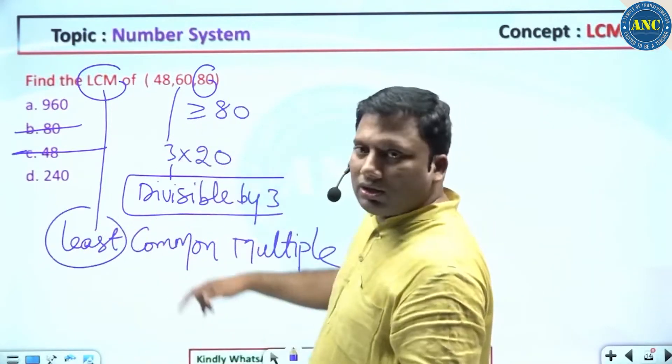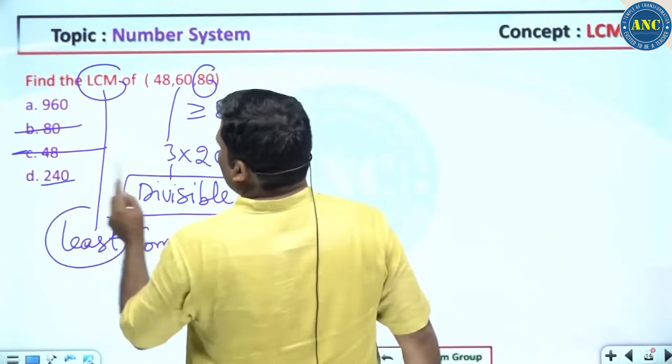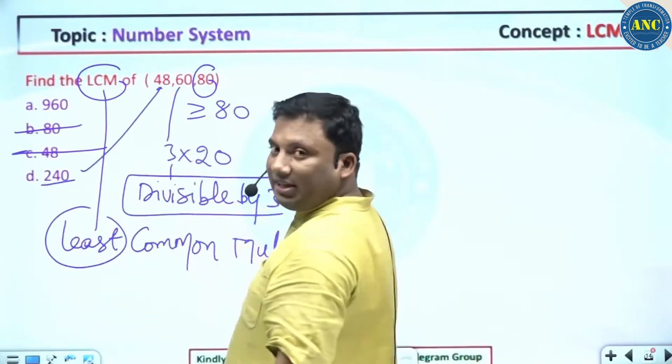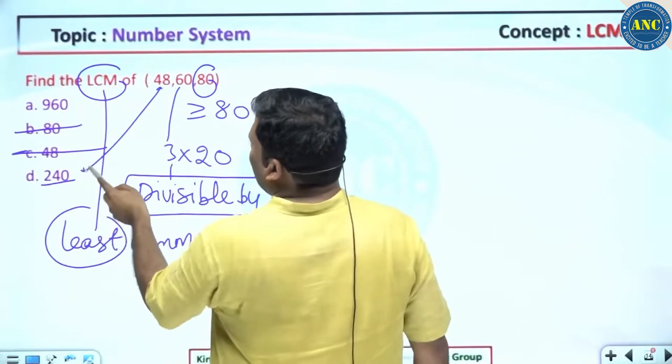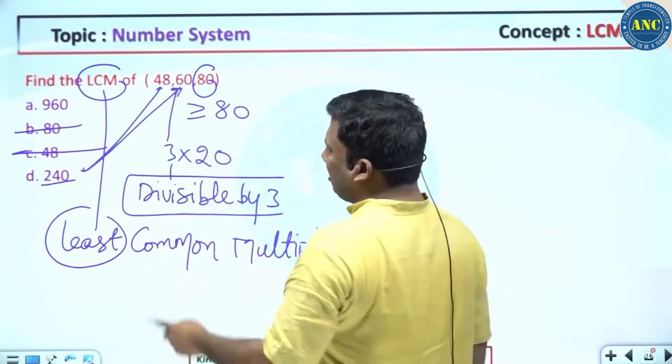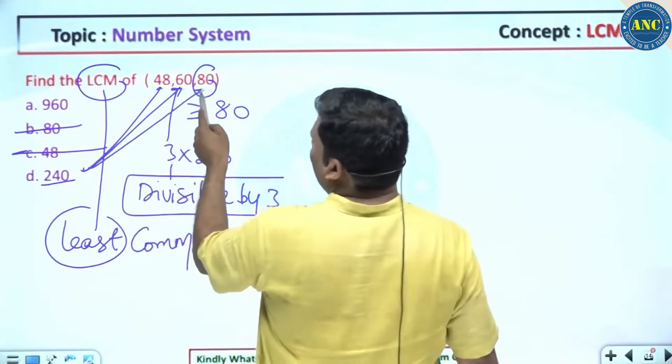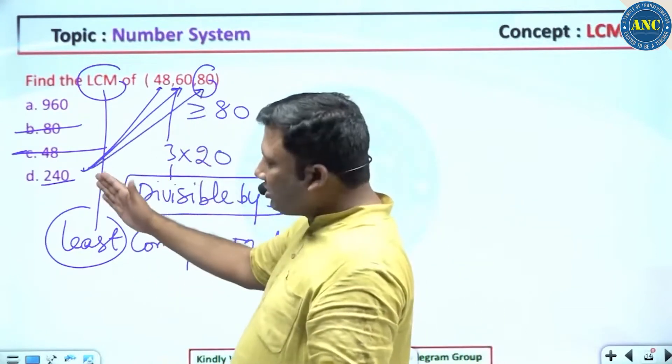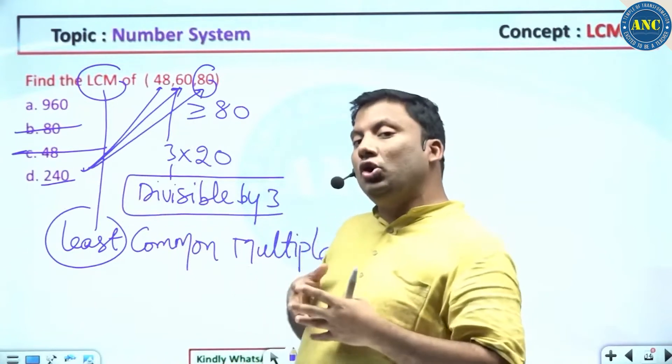240. Is 240 divisible by 48? Yes, 5×48. Is 240 divisible by 60? Yes, 4×60. Is 240 divisible by 80? Yes. So the answer is 240.